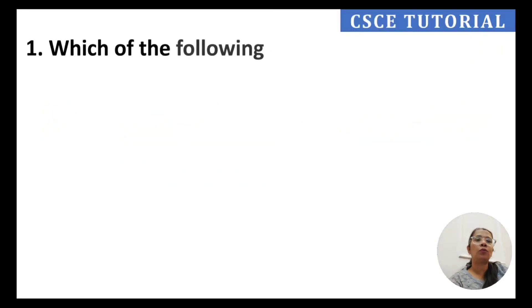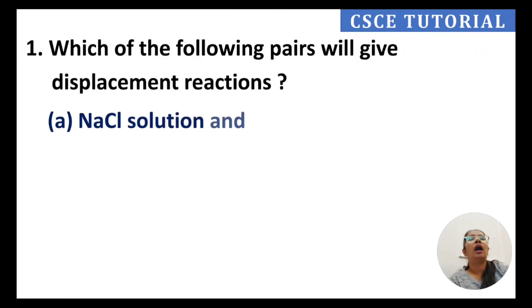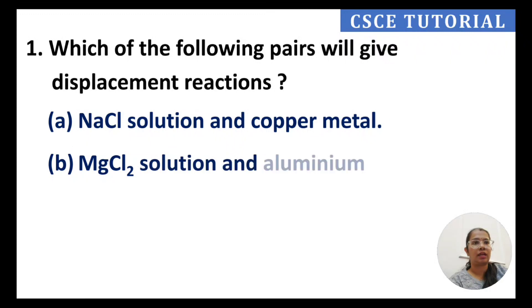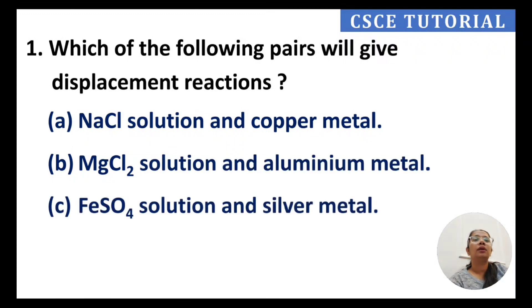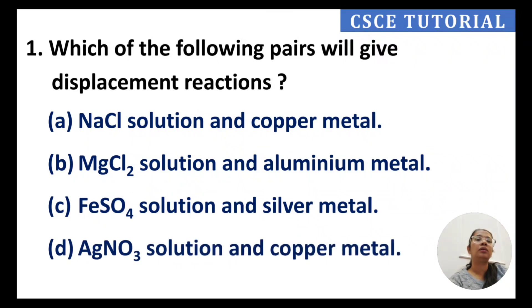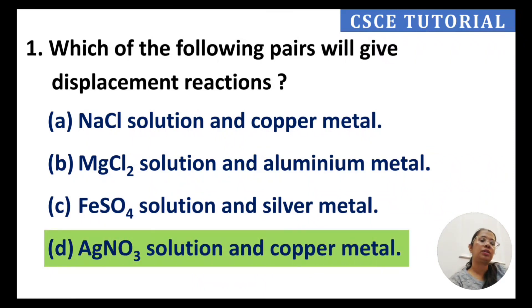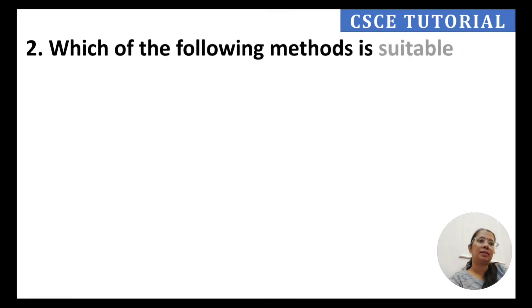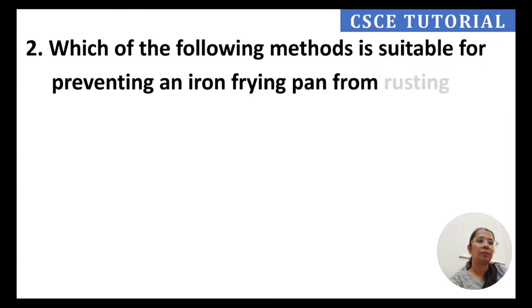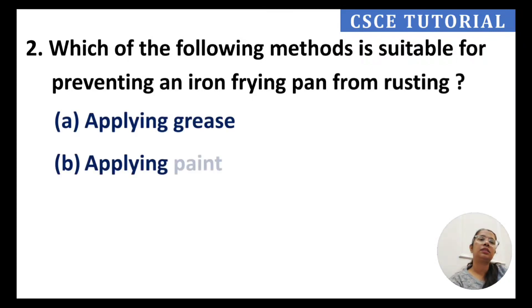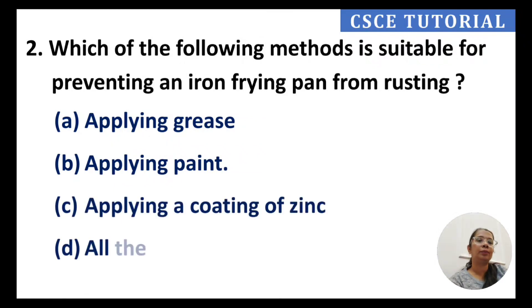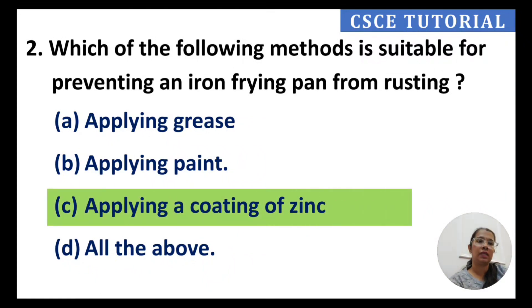Now we go to page 56 questions. Question 1: Which of the following pairs will give a displacement reaction? The answer is D — silver nitrate solution and copper metal. Question 2: Which method is suitable for preventing an iron frying pan from rusting? The answer is applying a coat of zinc, which will prevent the frying pan from rusting.